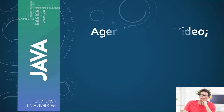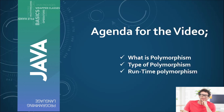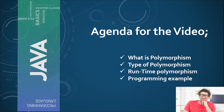Here we have the agenda for the video. First of all we will see what is polymorphism, and after that we will see the types of polymorphism. Following that we will see runtime polymorphism, and we will wrap up this video by discussing a programming example where we will see how we can achieve runtime polymorphism.